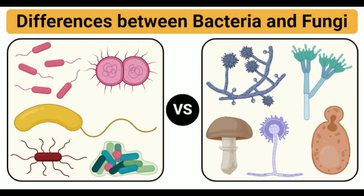Pathogenic bacteria have a capsid as the outermost covering, which serves the function of protection. Based on staining techniques, bacteria are divided into gram-positive and gram-negative bacteria. The difference in staining is due to structural differences in the cell wall of different bacteria.